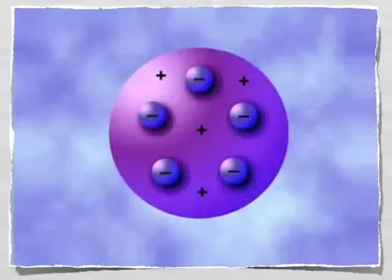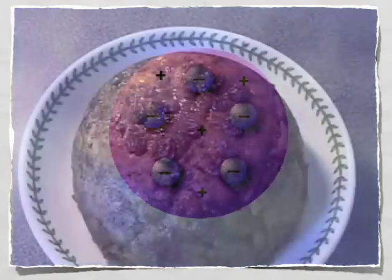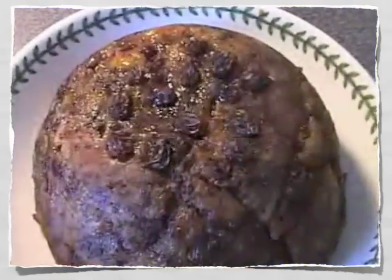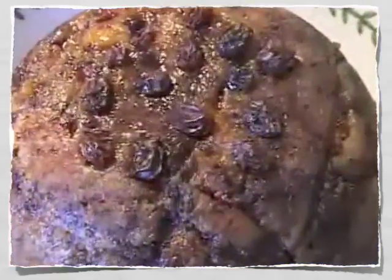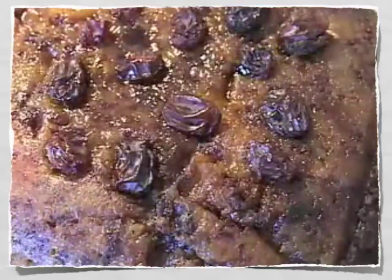Thomson also hypothesized that positively charged material existed in the atom. In his model of the atom, he proposed that an atom was made of a positively charged material in which negatively charged electrons were scattered. His model of the atom became known as the plum pudding model. He envisioned small electrons embedded in the atom, much like raisins embedded in a plum pudding.